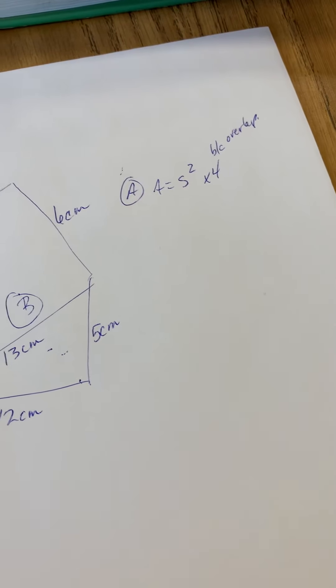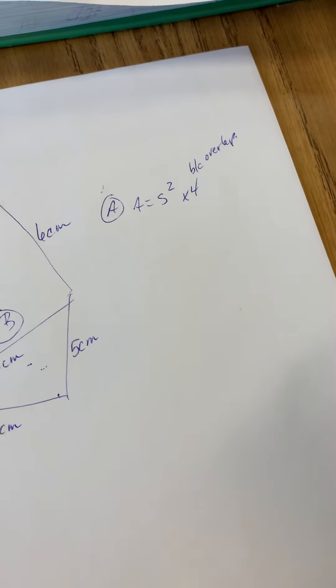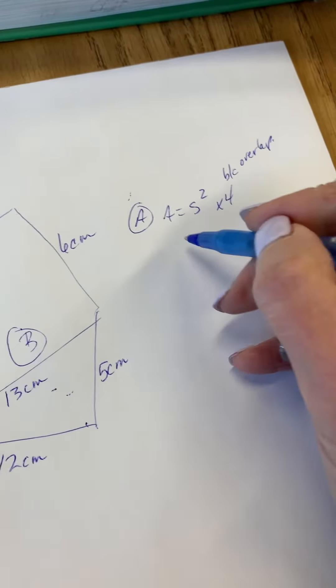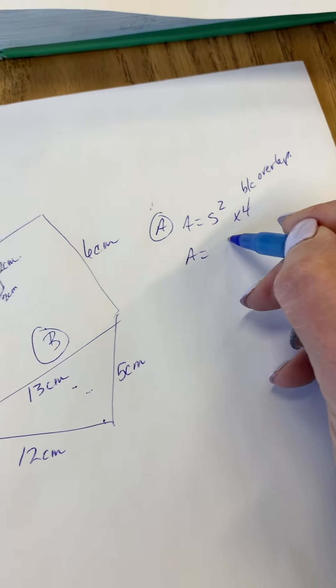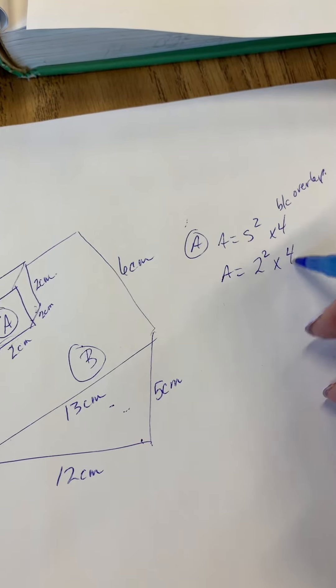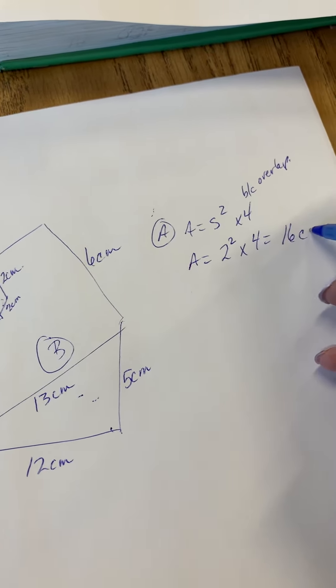Remember I did that in the last video where I showed you a different strategy, and I'm going to use that different strategy when I show you a really hard one on Monday. Okay, so here we go. For now we're just going to stick with the basic side 2, 2 squared is 4, and 4 times 4 is 16 centimeters squared.